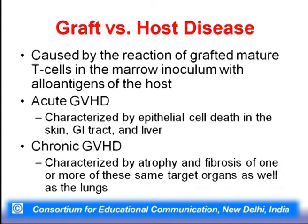Graft versus host disease — it is not truly a disease, but is mentioned as such because at every point either the host is superior or the graft is superior. The entire balance of graft versus host reaction leads to something known as graft versus host disease. It is caused by the reaction of grafted mature T cells in the marrow inoculum with alloantigens of the host. Acute graft versus host disease generally leads to epithelial cell death in the skin, GI tract, or liver not surviving at all. Chronic graft versus host disease is characterized by atrophy and fibrosis of one or more target organs, as well as the lungs.